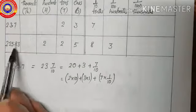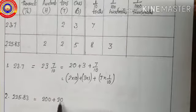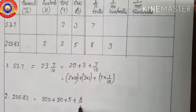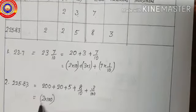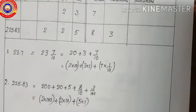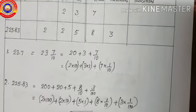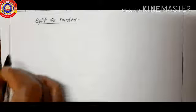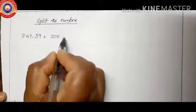And 225.83 in expanded form is 200 plus 20 plus 5 plus 8 by ten plus 3 by hundred, that is 2 into hundred plus 2 into ten plus 5 into one plus 8 into one-by-ten plus 3 into one-by-hundred. Is it clear, children?